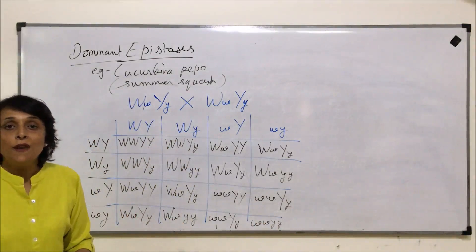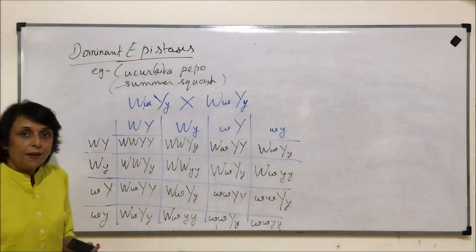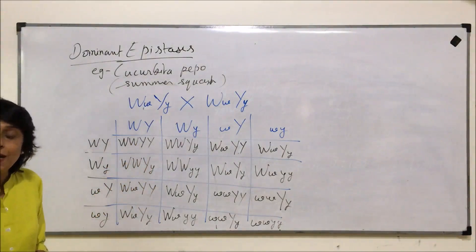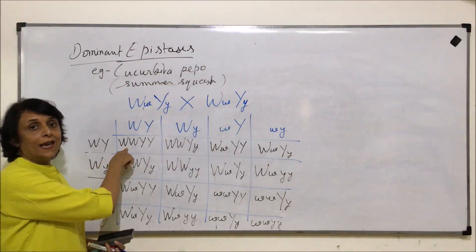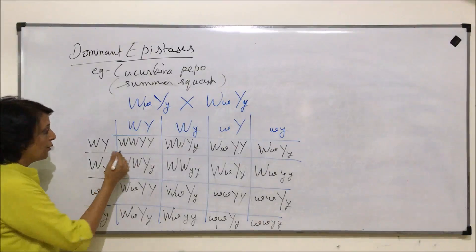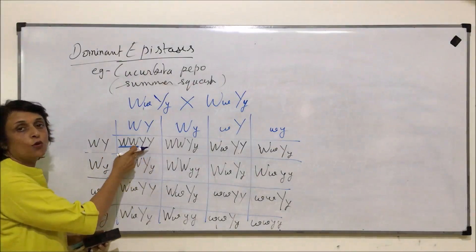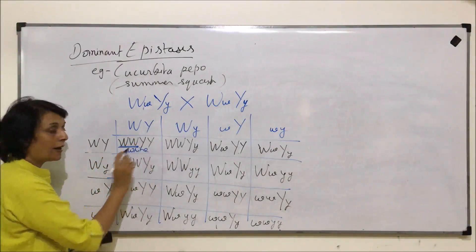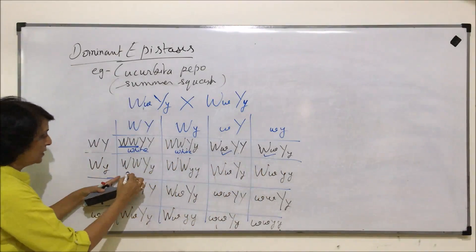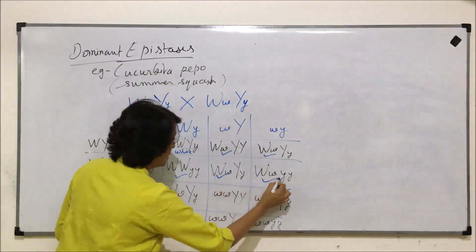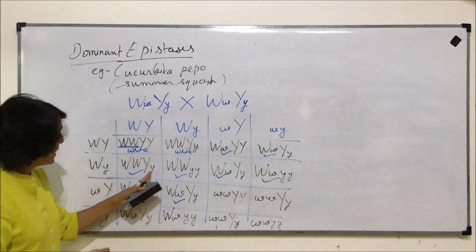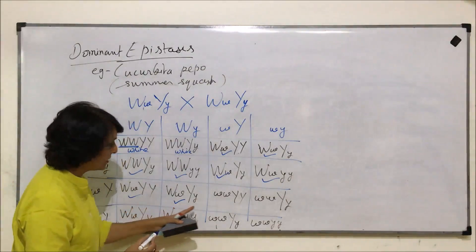Now we determine the flower color produced by each offspring. Remember, W is epistatic and Y is hypostatic. As long as W is capital - meaning any one W is capital - it will not let Y express itself. So when there are two capital Ws, Y cannot express itself, giving white. Wherever we find capital W in the Punnett square, the offspring will be white, because even if Y genes are present, the hypostatic gene cannot express.